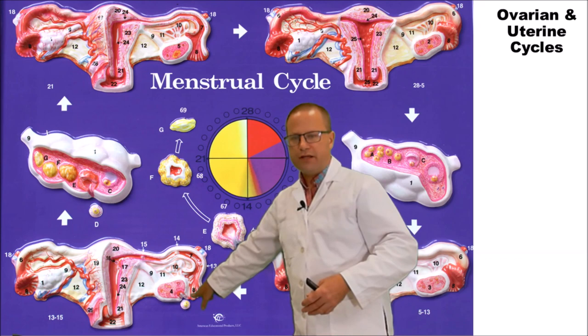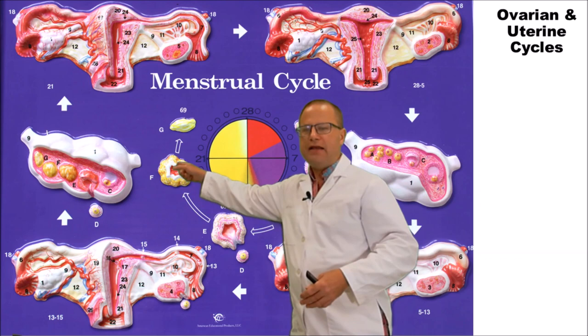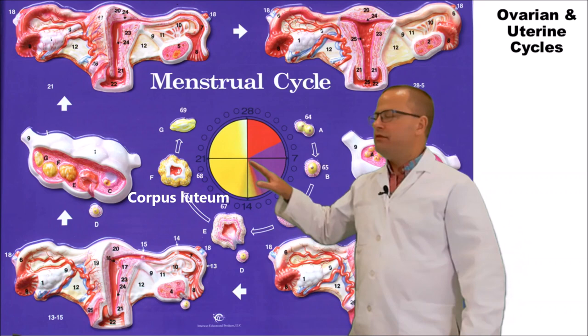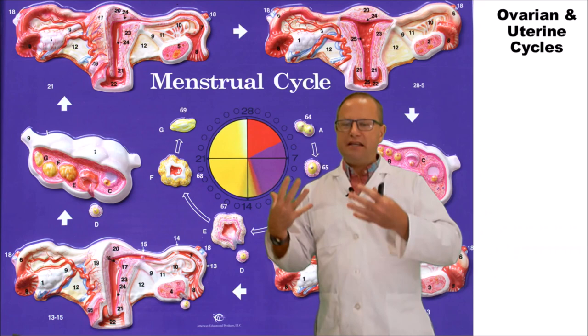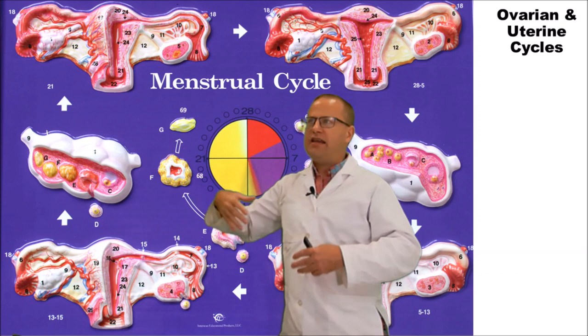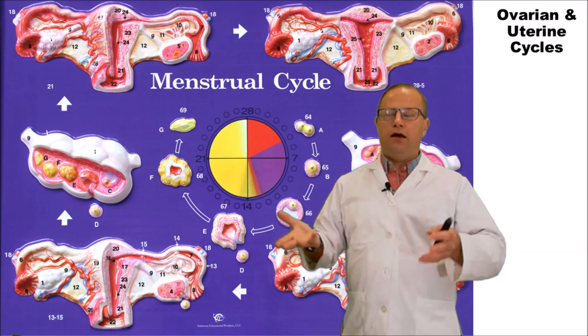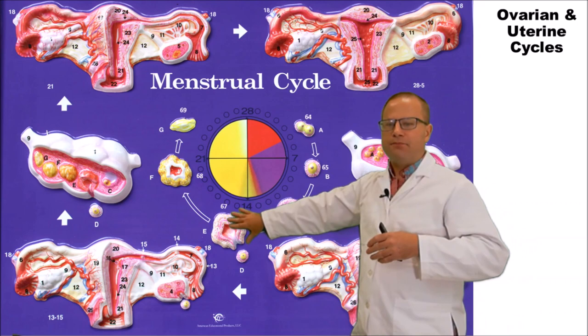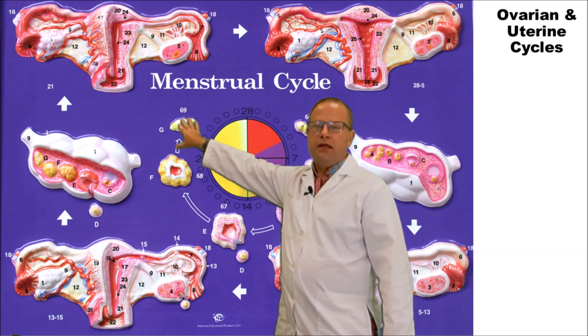After ovulation, the leftover ring of follicular cells remains in the ovary without the egg and transforms into the corpus luteum. The corpus luteum switches from producing primarily estrogen to producing primarily progesterone — 'pro-gestation,' getting the uterus ready for potential implantation by thickening the uterine lining and increasing secretions. If implantation doesn't happen within about seven days, the corpus luteum breaks down into the corpus albicans — the white body — and ceases progesterone production. Without progesterone, the uterine lining breaks down and menstruation begins.